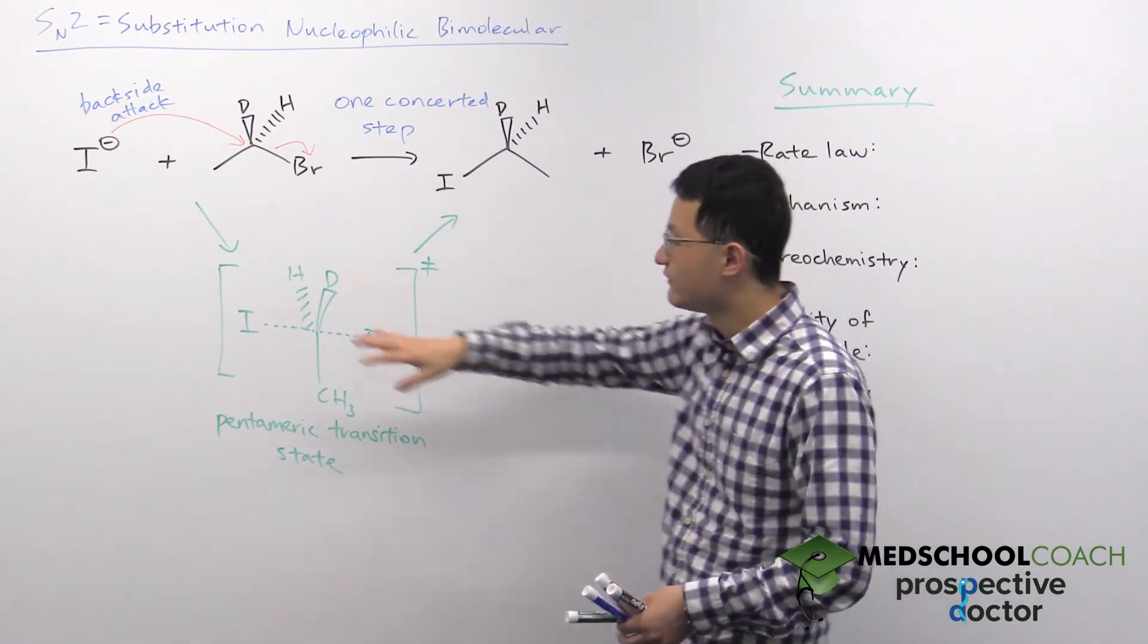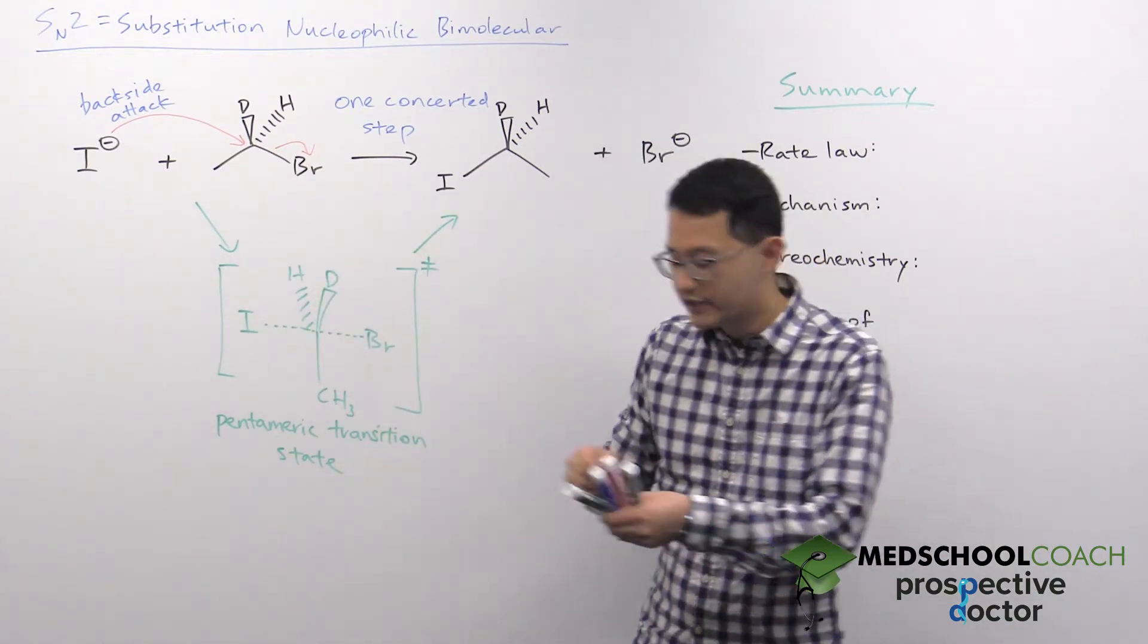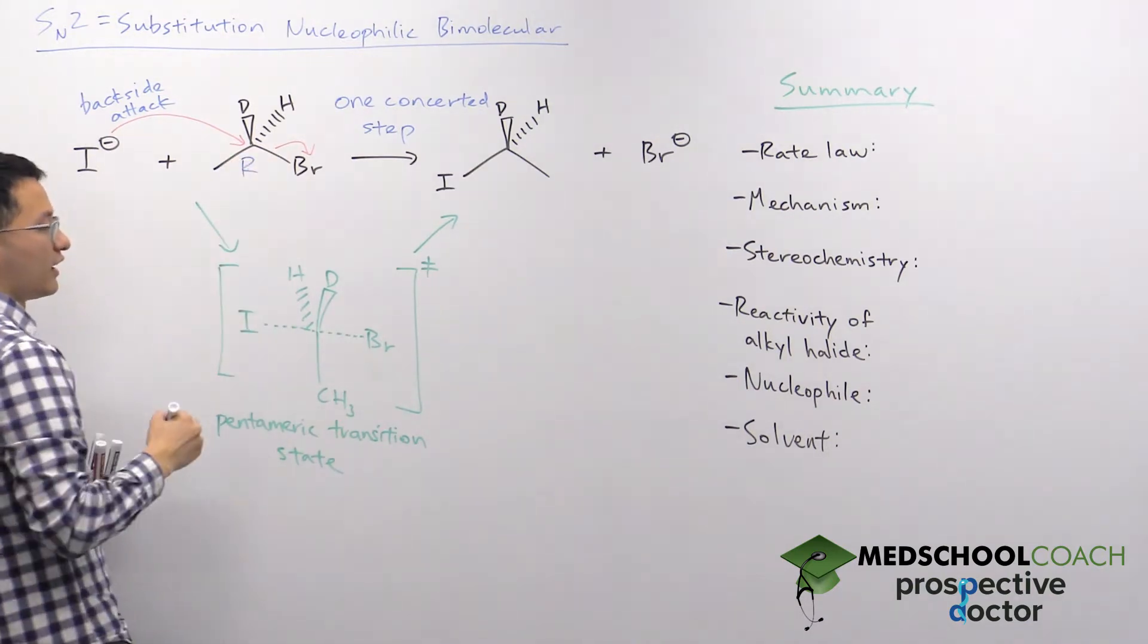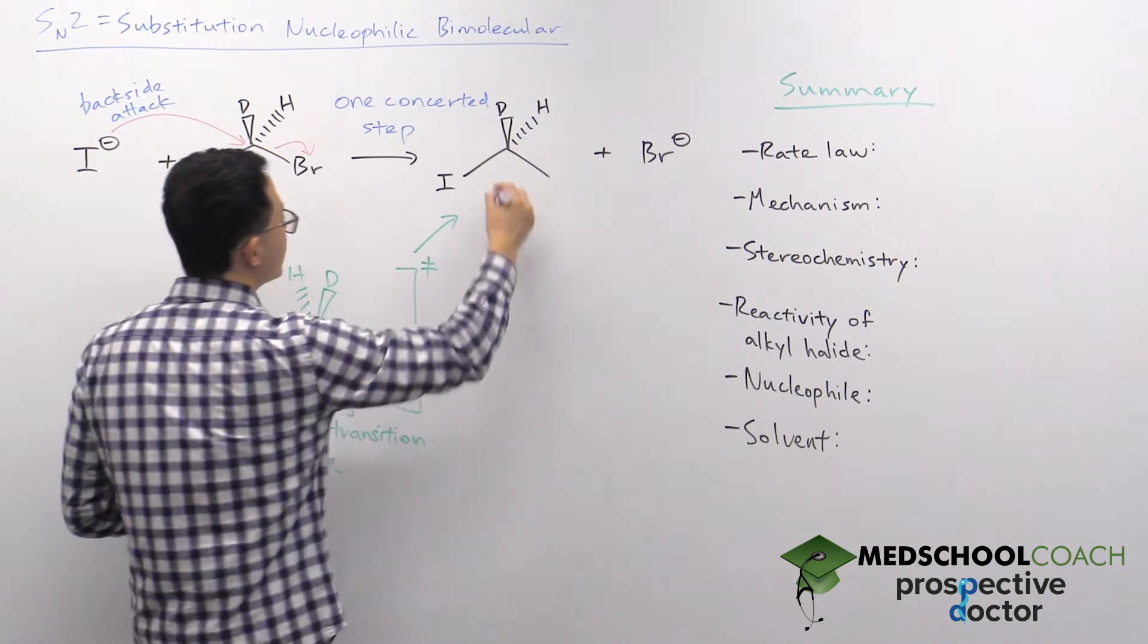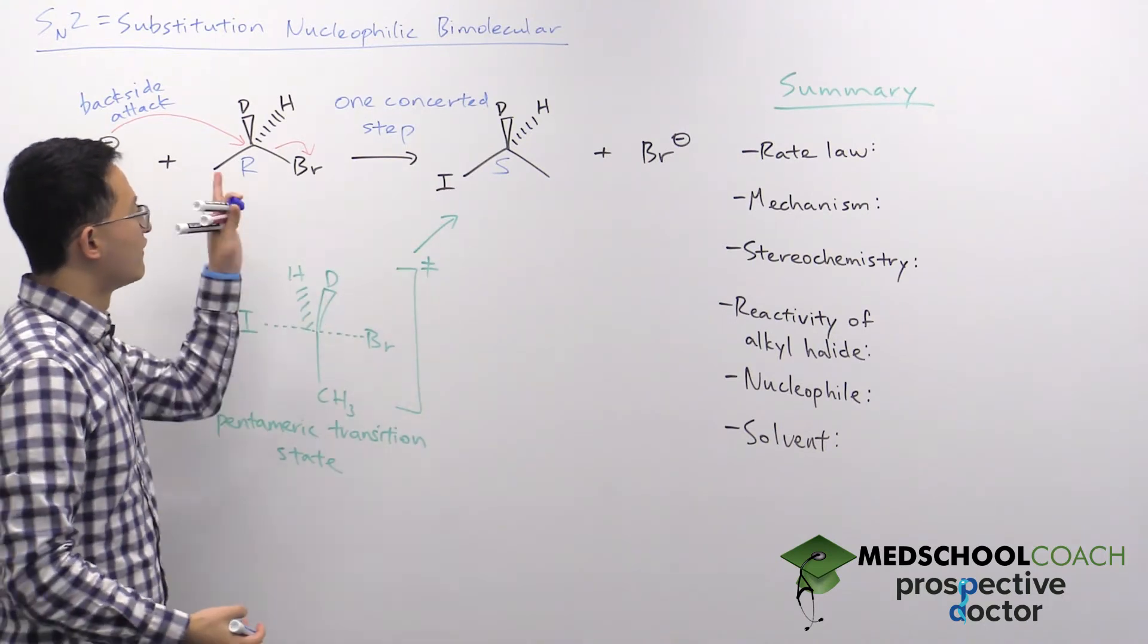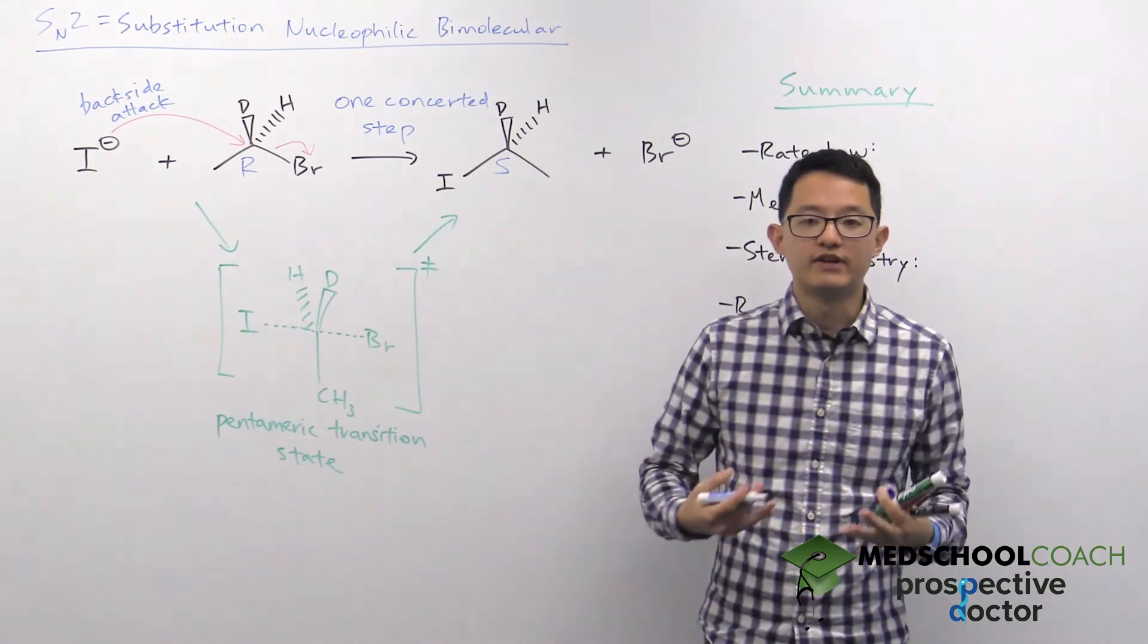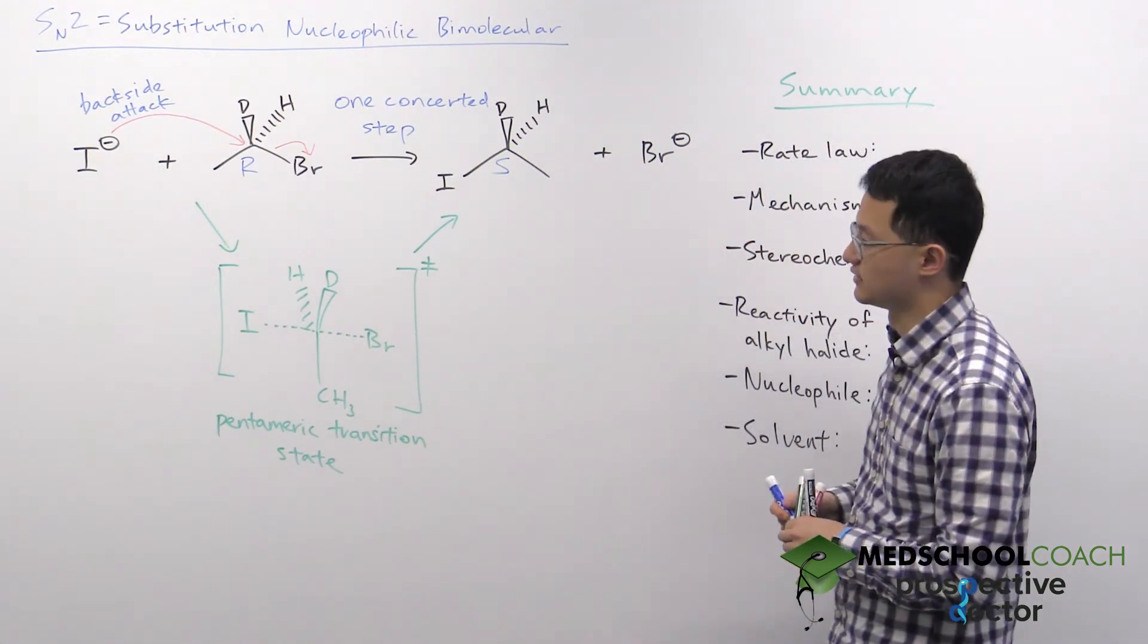In fact, if you take a look at the absolute configuration of our starting alkyl halide, you notice that it has an absolute configuration of R. But when you look at the absolute configuration of your product, you're going to see that its absolute configuration is now S. This change in the absolute configuration from R to S is what we call inversion of configuration. So that you can also expect from the SN2 reaction.